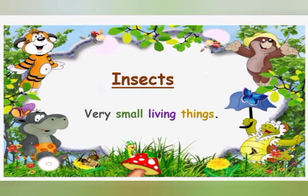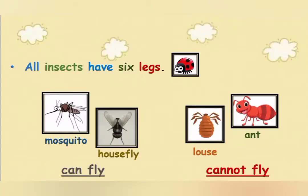پیارے بچوں, insects are also animals. Insects بہت چھوٹے جاندار ہیں. My dear kids, all insects have six legs. تمام insects کی چھے ٹانگیں ہوتی ہیں. Mosquito, house fly, louse اور ant insects کی examples ہیں. وہ ہشرات جن کے پر ہوتے ہیں وہ fly کر سکتے ہیں جیسے mosquito اور house fly، اور louse اور ant کے پر نہیں ہوتے، that's why they cannot fly.